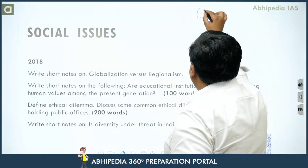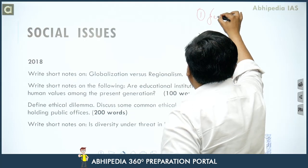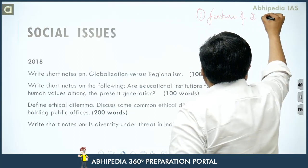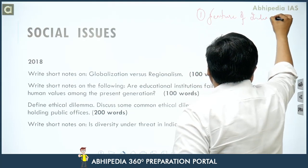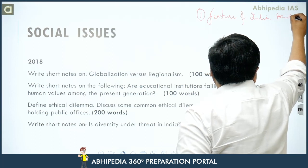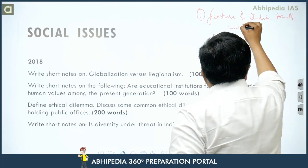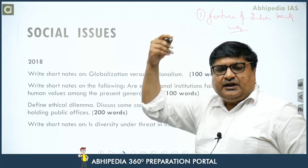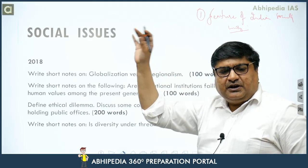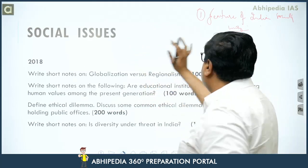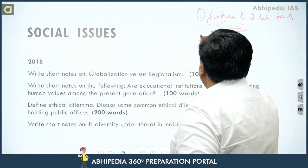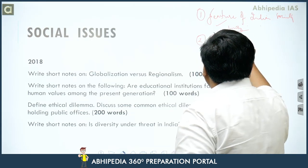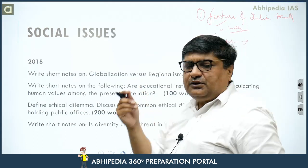The most important features of Indian society include unity and diversity, caste, joint family — these are key features. The second important area is gender issues: women and women's organizations. One or two questions have come from gender in previous papers.